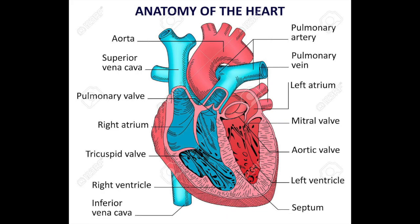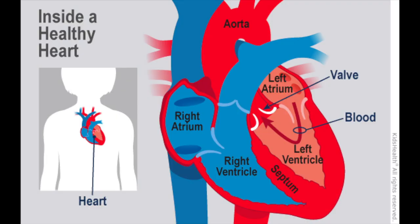Adding on to the pulmonary valve, there are pulmonary arteries and pulmonary veins. Pulmonary veins transport oxygenated blood back to the heart from the lungs, while the pulmonary arteries move deoxygenated blood from the heart to the lungs. Last but not least, the septum, which is basically a barrier that separates the atrium and ventricles, prevents the mix between deoxygenated and oxygenated blood.